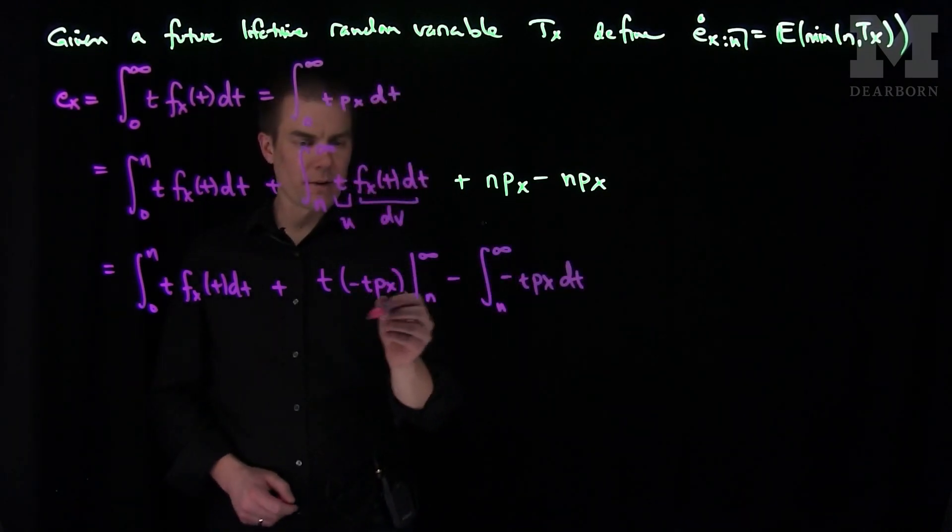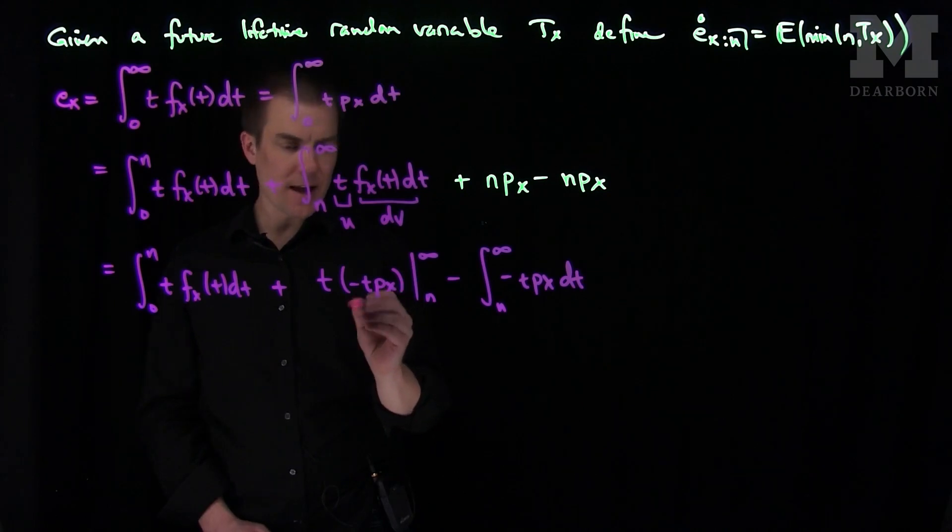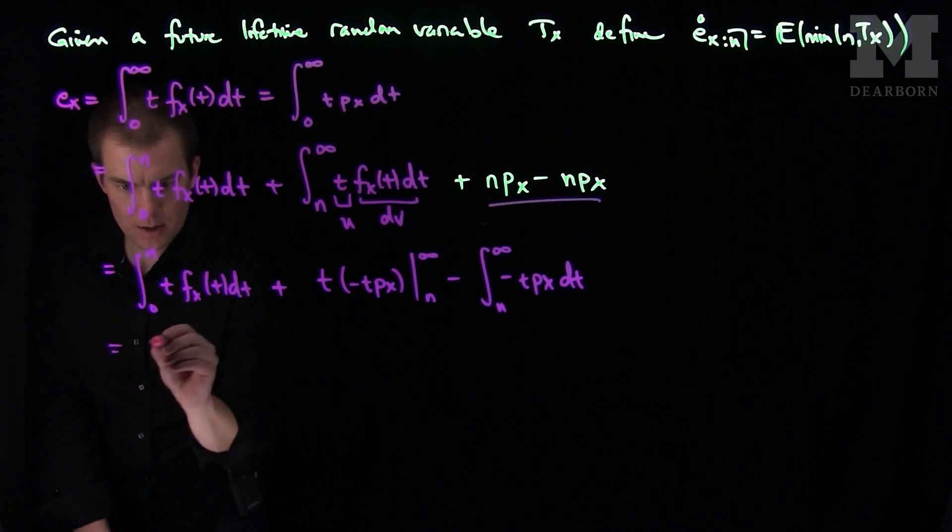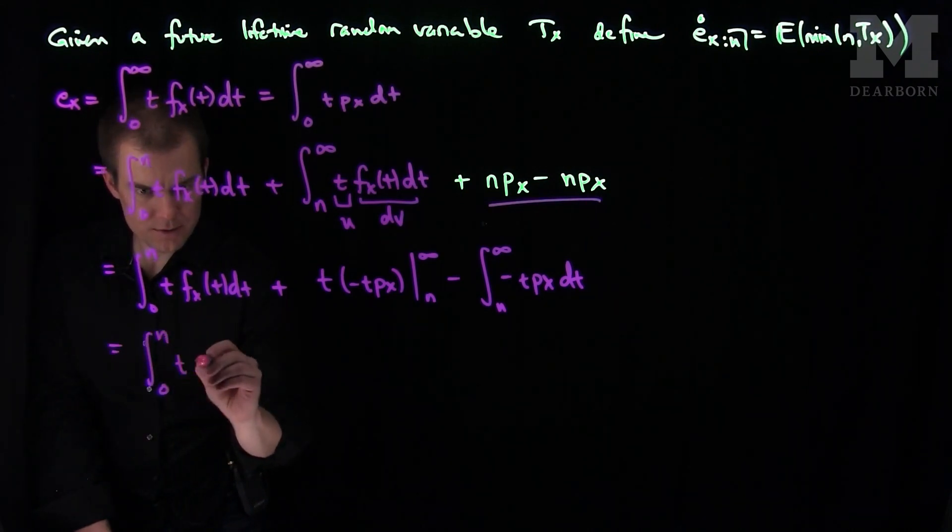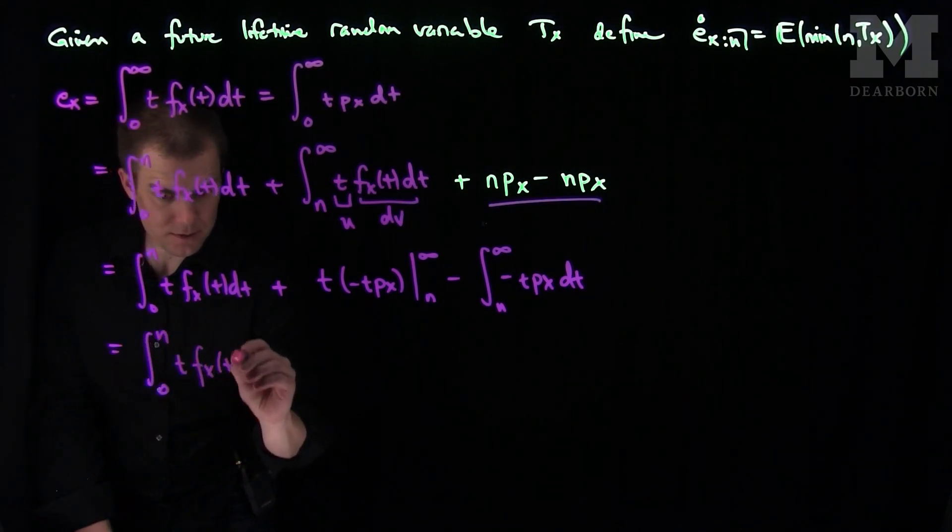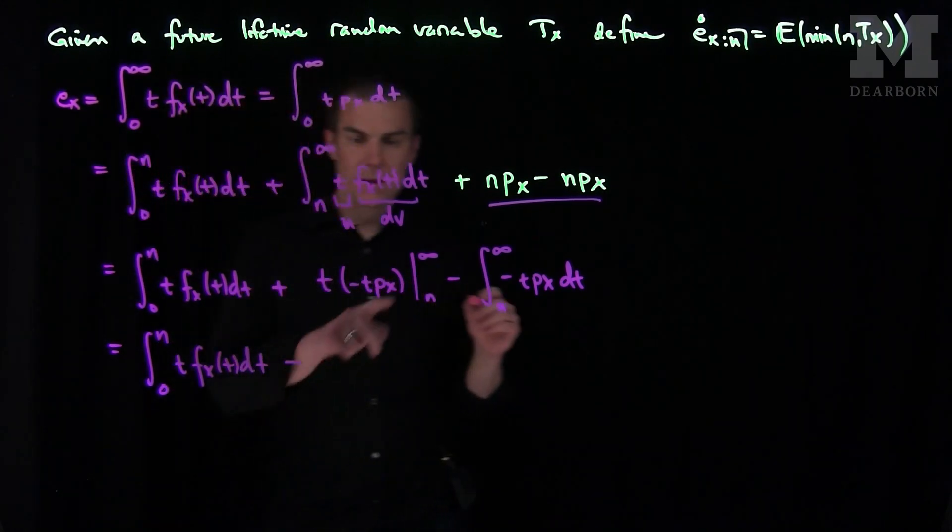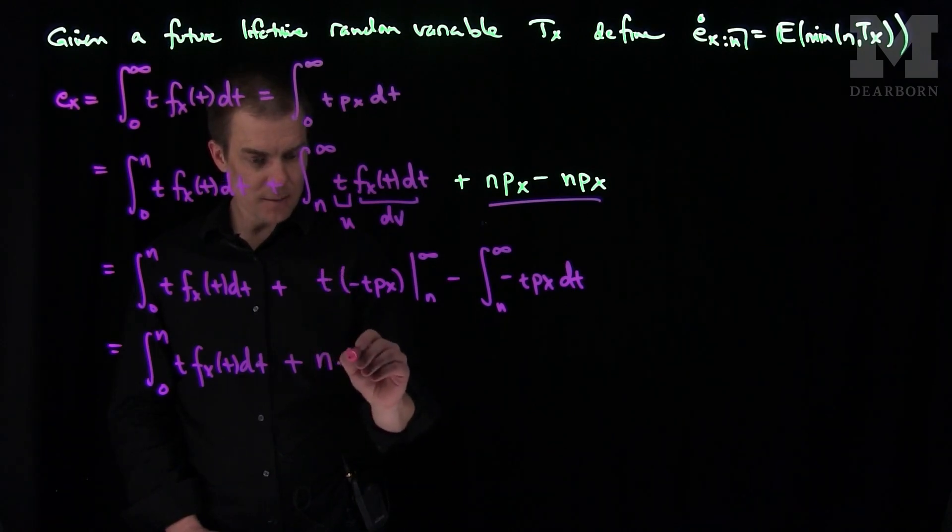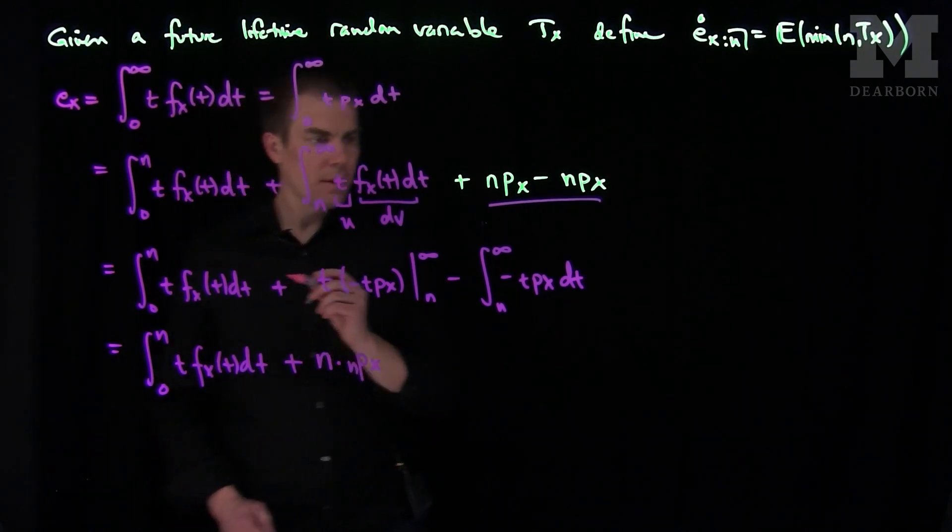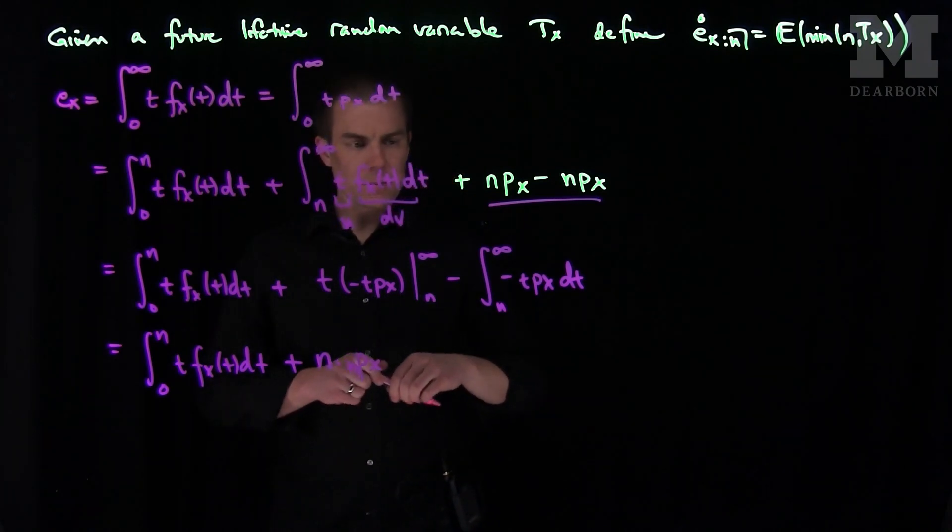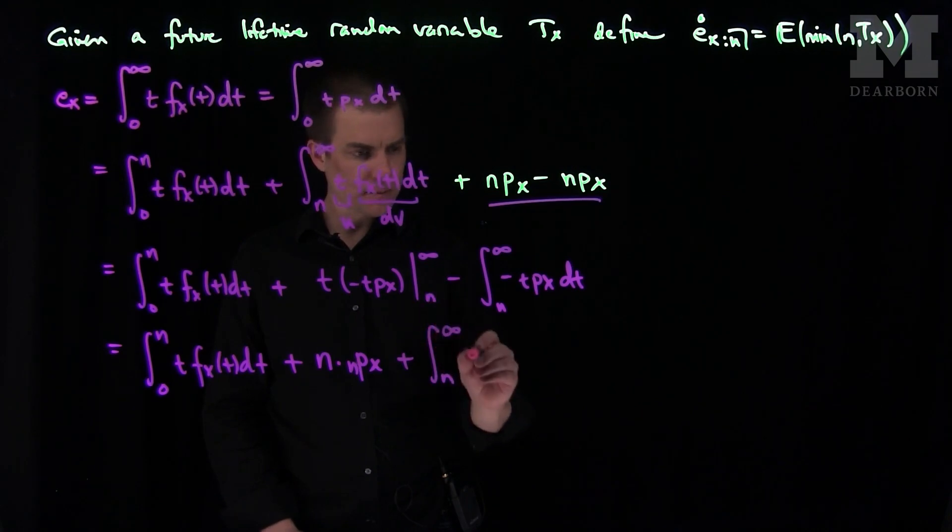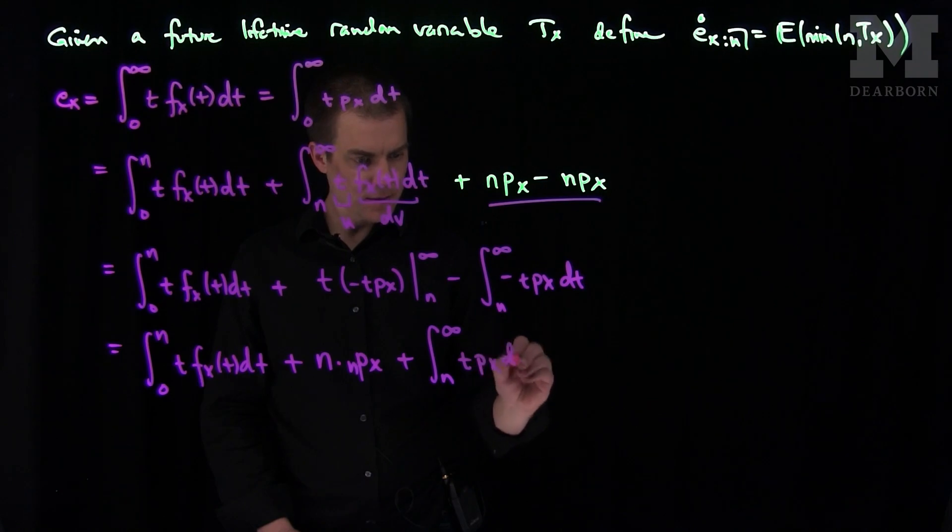Now as we saw before, the infinity will vanish. If I plug in n, I'm going to have a negative n. So this is going to be the integral from 0 to n of t f(x,t) dt. Then I'll have, that will be the bottom of it, so I'll turn into a positive n times pxn. And then what we'll have is plus the integral from n to infinity of tpx dt.